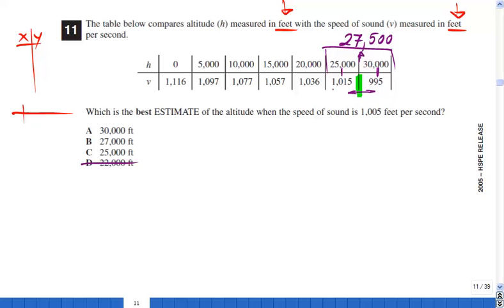What is halfway between 1015 and 995? Well, the difference is 20. Which means if I'm going down 10 units, I will get 1005. That's right here in the middle.